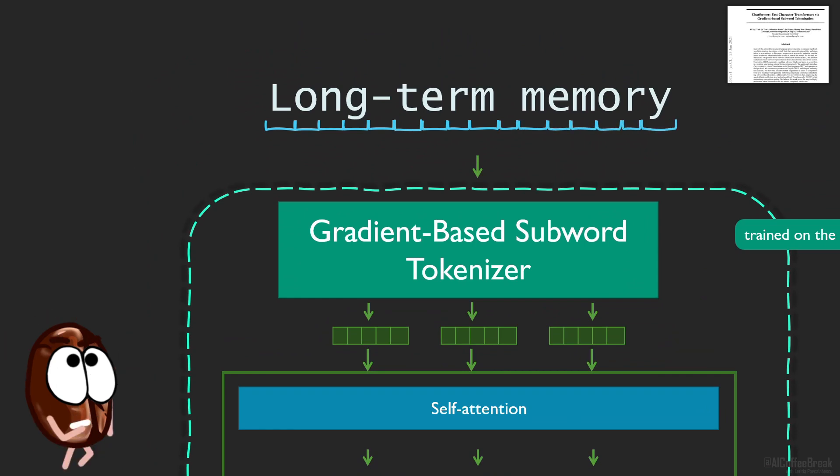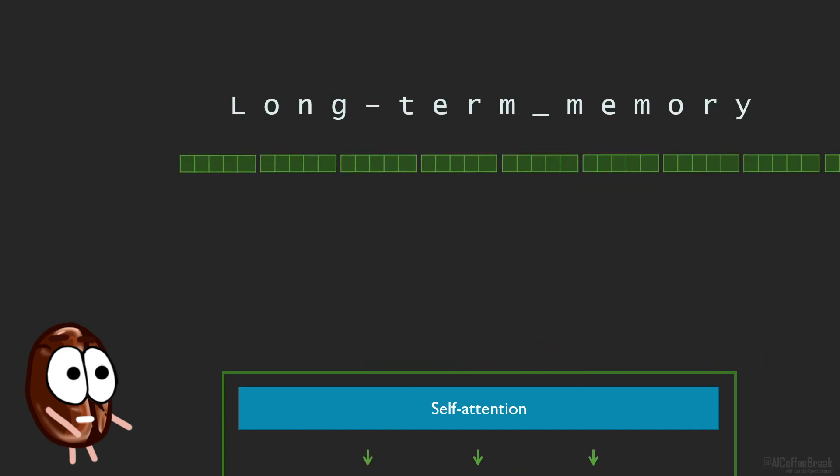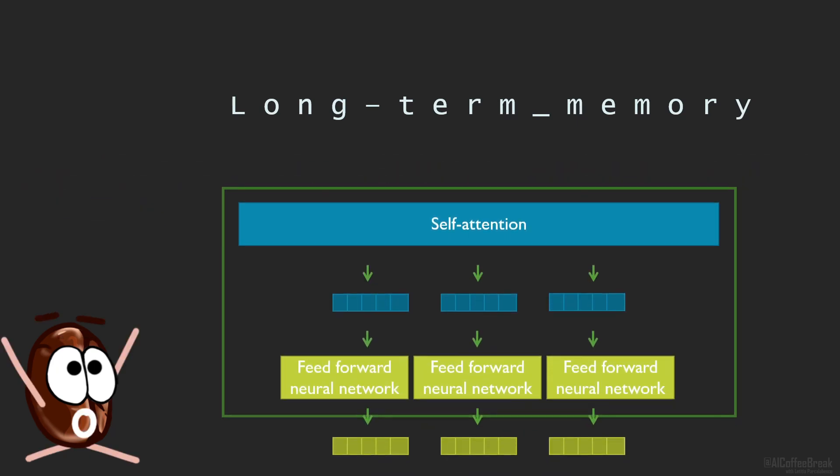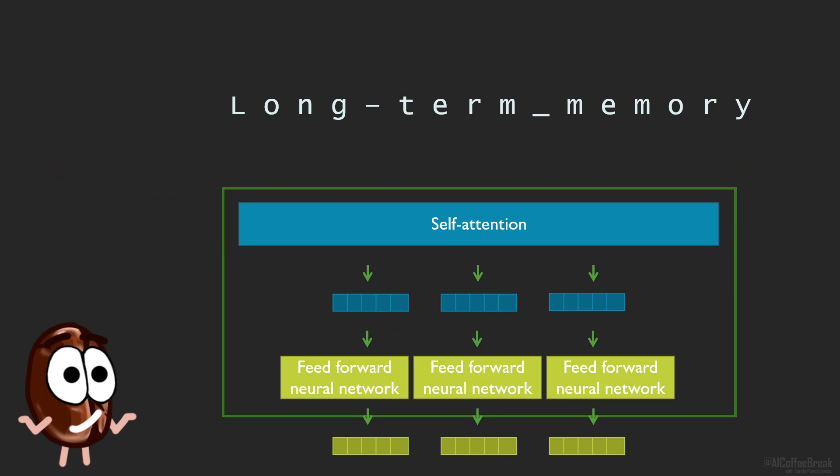But Ms. Coffee Bean wants to know, why do we need a charformer in the first place? What if we would take in the characters, give them all an initial vector representation, and throw them like that into the transformer and boom, problem solved? Well Ms. Coffee Bean, it is not that easy.